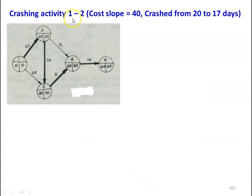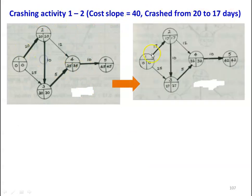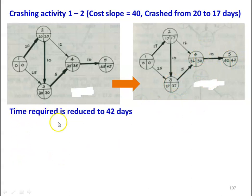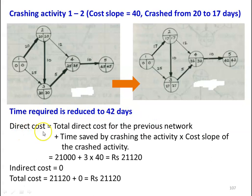First, activity 1-2 is crashed with cost slope 40, from 20 days to 17 days. The project duration is reduced from 45 days to 42 days. The critical path remains 1-2, 2-3, 3-4, and 4-5 with no change. Direct cost = 21,000 plus (3 days saved × 40) = 21,120. With no indirect cost, total cost equals 21,120.